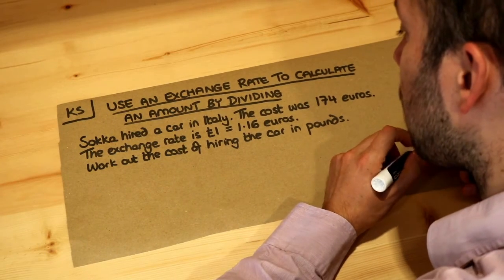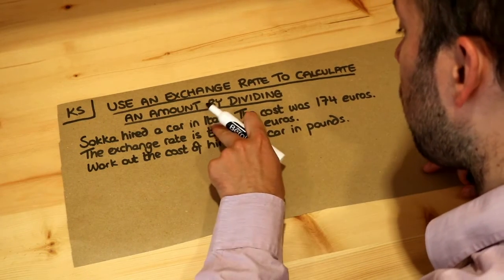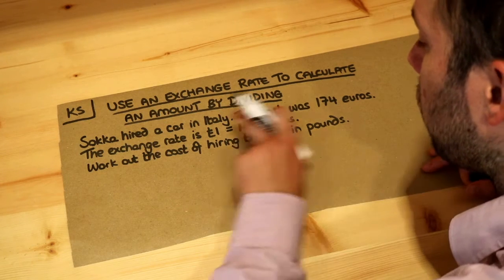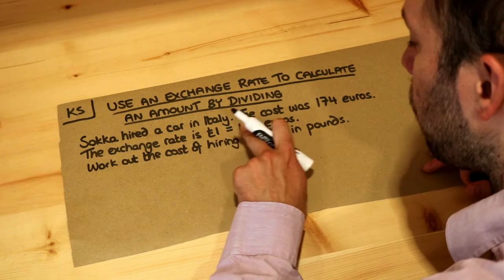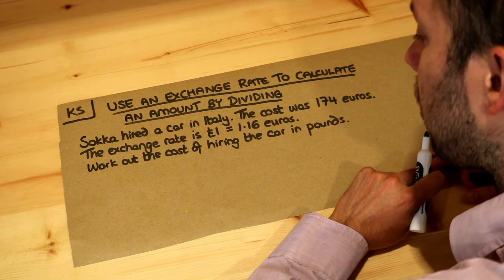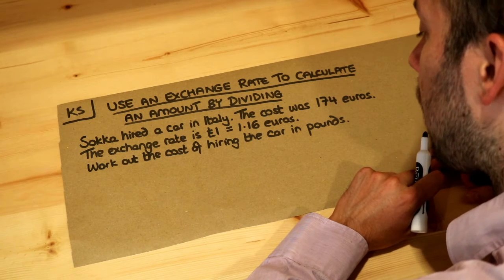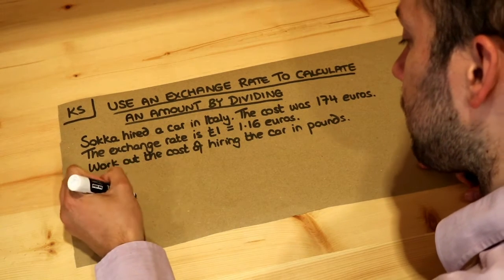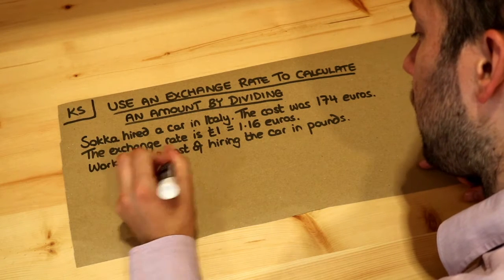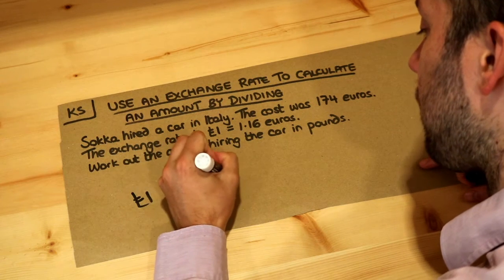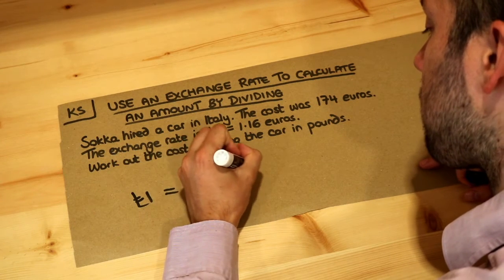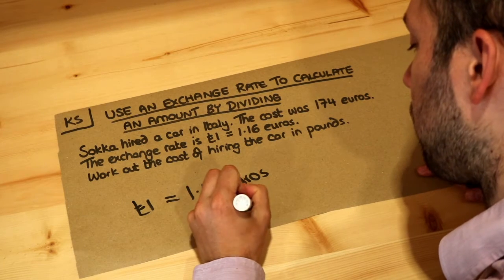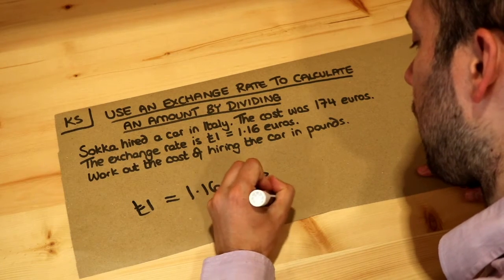So we want to hire a car in Italy — the cost was 174 euros. The exchange rate was one pound will give you 1.16 euros. Work out the cost of hiring the car in pounds. Let's just write out the exchange rate again, bigger. We're starting with 174 euros and we want to convert that from euros to pounds.